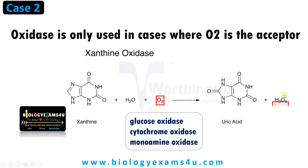Oxidoreductase enzymes are also termed as dehydrogenase, as we mentioned in the first case — succinate dehydrogenase — then oxidase, then reductases or oxidoreductases. These are the terms commonly used to describe enzymes belonging to this class. We have given a detailed video on six classes of enzymes and their reactions. You can refer to that video for more.